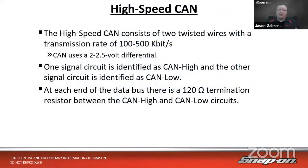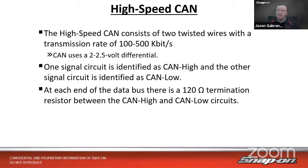Recap on CAN: high-speed CAN consists of two twisted wires with a transmission rate of 100 to 500 kilobits per second for standard CAN. There's also a slightly faster version that goes up to one megabit per second — twice as fast. When you get down to around 100 kilobits per second, you might be talking about what's called mid-speed or medium-speed CAN, in that hundred kilobit range.